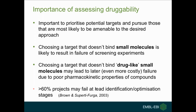It's important to prioritise targets that are most amenable to a particular approach. If we choose a target that doesn't bind small molecules, we might spend a lot of time doing screening experiments and HTS without finding good hits. Even worse, we might find hits but if the target doesn't bind drug-like small molecules, compounds may have poor pharmacokinetic properties and fail in the clinic. It's estimated that around 60% of projects may fail at the lead identification or optimisation stages.